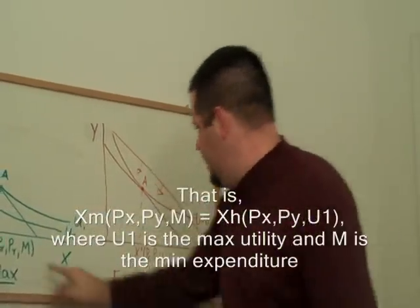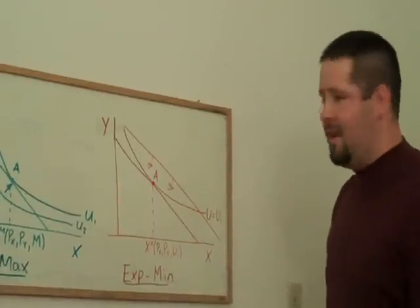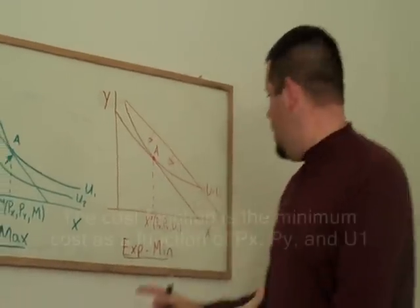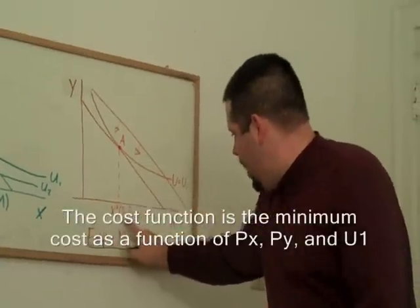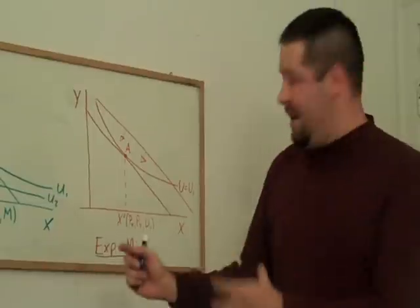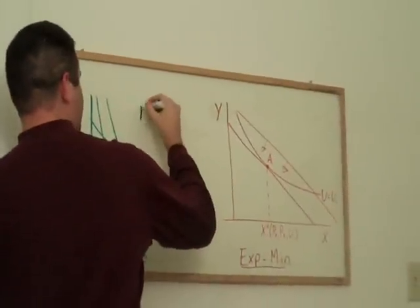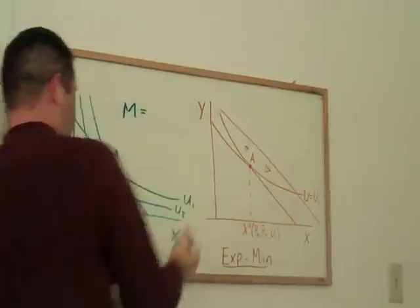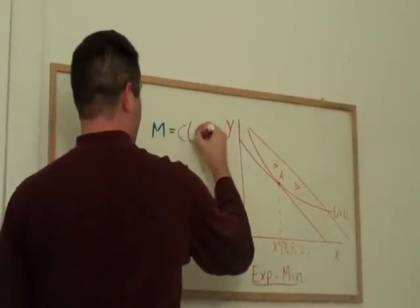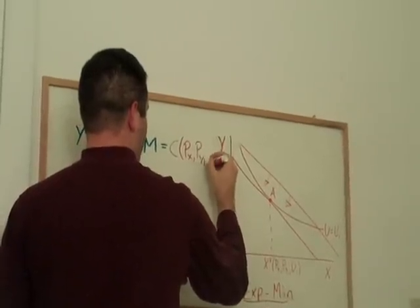And notice that these expenditures over here, if we write them out, we can think about them as the cost, or there's a cost function. It's a function of the price of X, price of Y, and the utility. We can go ahead and substitute that cost function in here, and one of the important relationships is that the income over here equals the cost function over here.